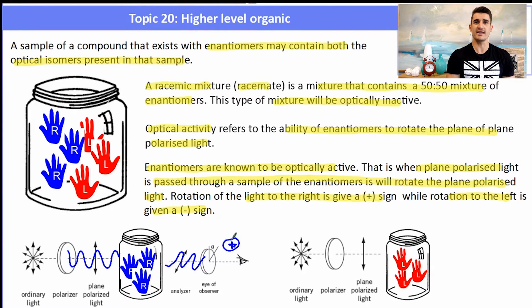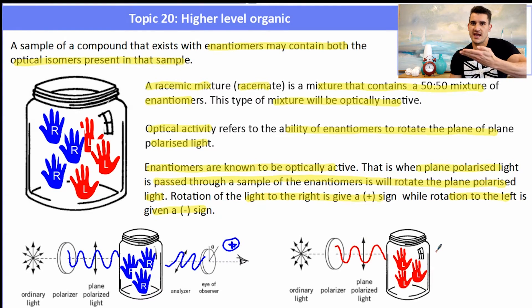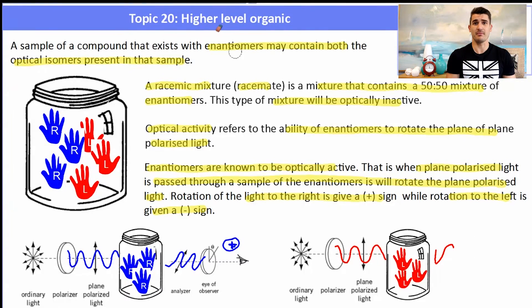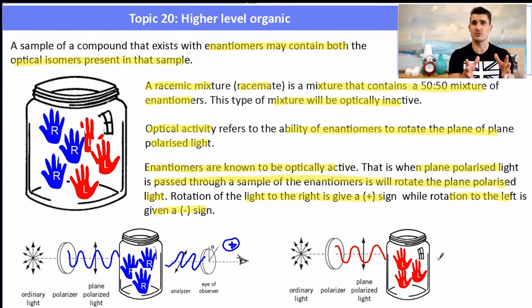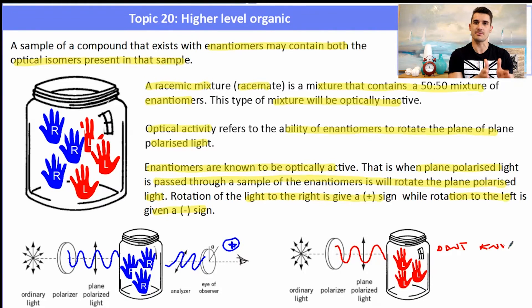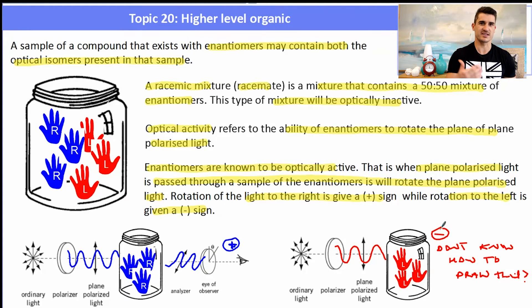Plane-polarized light means light of a single phase — an identical wavelength of light — and it's been separated using a polarimeter. One enantiomer will rotate it to the right and the other will rotate it to the left. If it rotates to the left, it's given a negative sign.